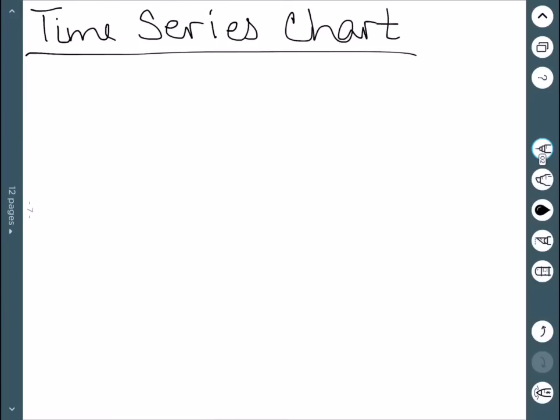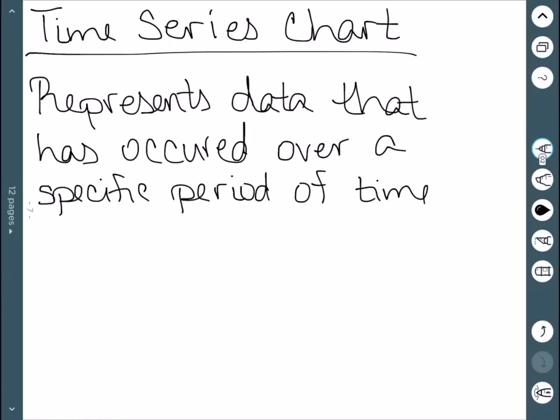We'll now look at what's called a time series chart. A time series chart, indicated by its name, represents data that occurs over a period of time. So we're looking at how things change in time. We can often see these with things like weather or stock market graphs.